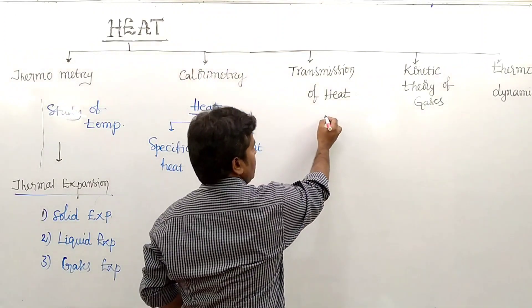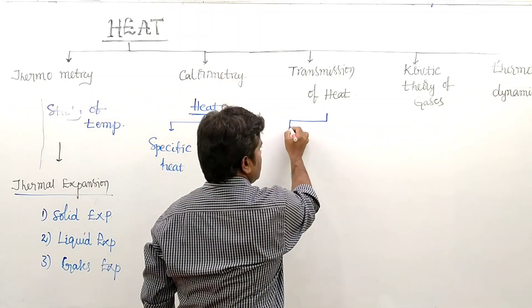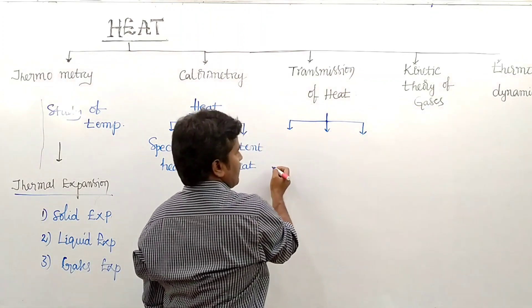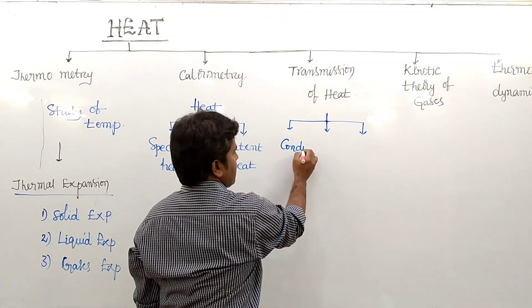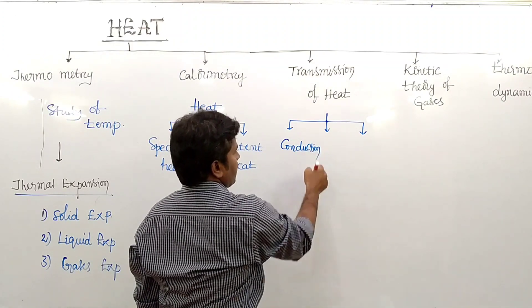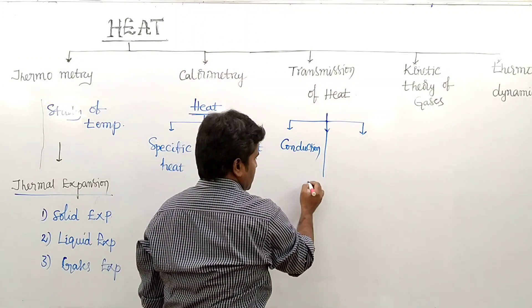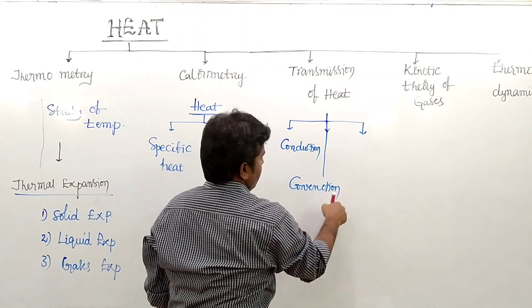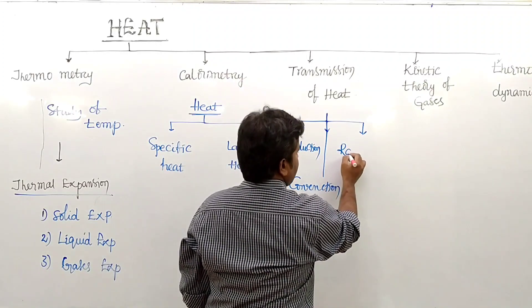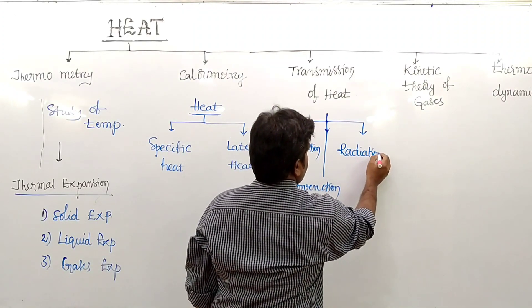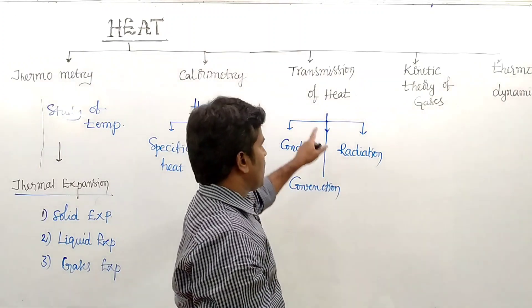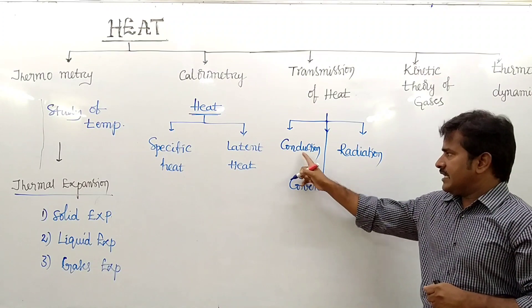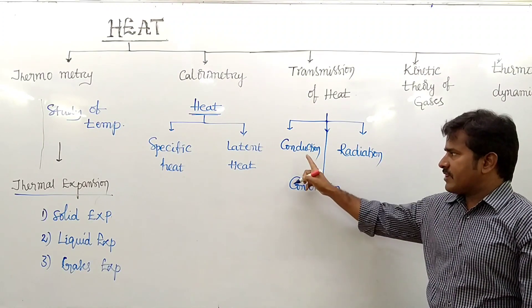Transmission of heat occurs when heat is transferred due to variation of temperature. There are three processes: conduction, convection, and radiation. These are the sub-topics of heat transmission.